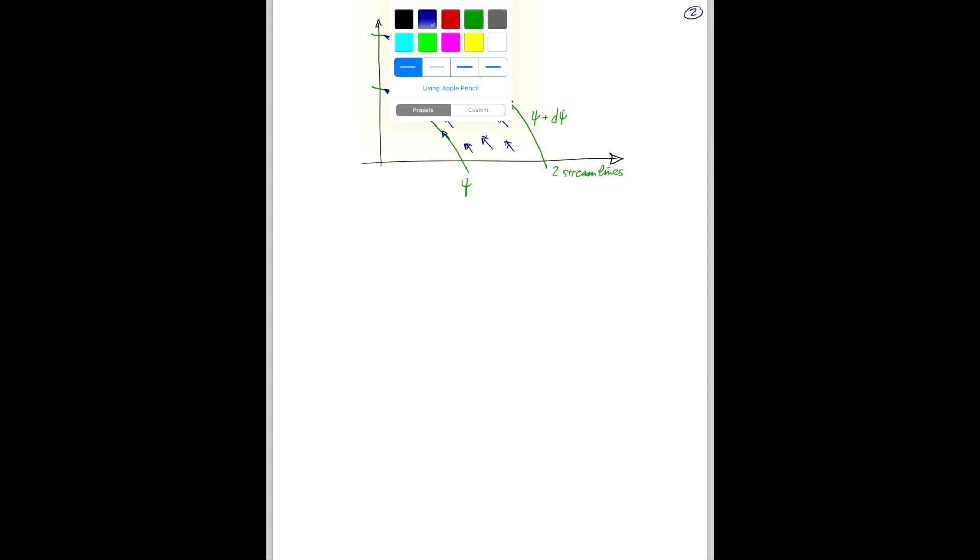So, we can ask, what is the flux between two points here? What is the flux between two streamlines? So, if this is point x, then this would be point x plus dx. And this line here is dx.